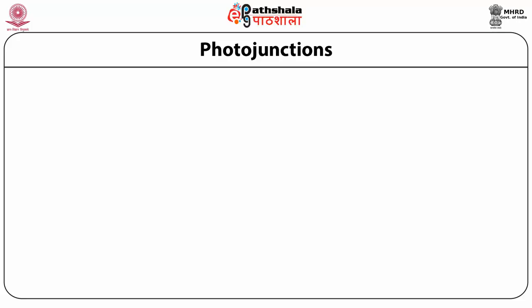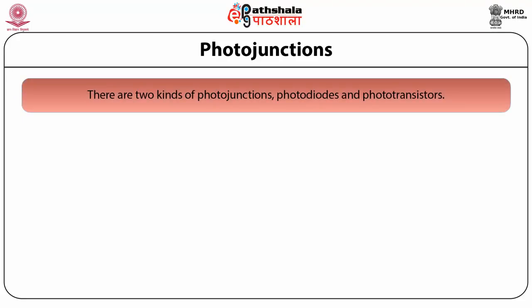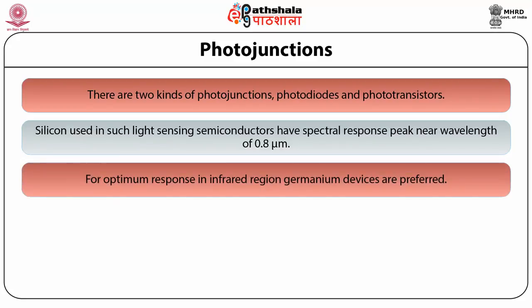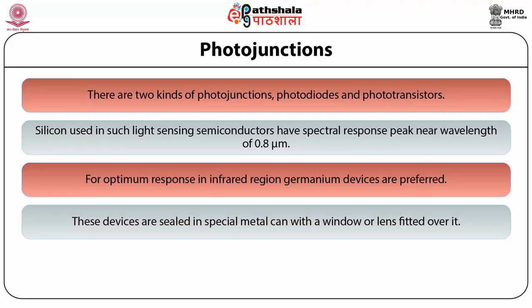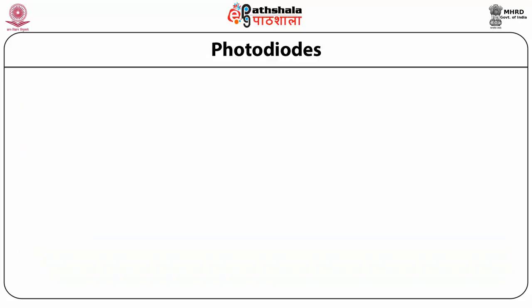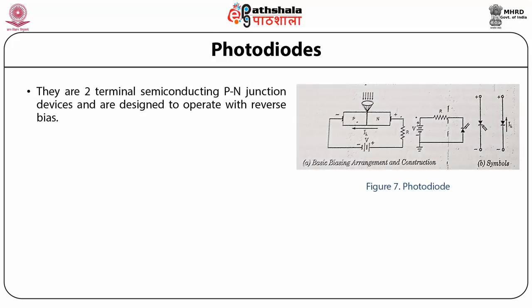There are two kinds of photojunctions: photodiodes and phototransistors. Silicon used in such light-sensing semiconductors has a spectral response peak near a wavelength of 0.8 microns. For optimum response in the infrared region, germanium devices are preferred. These devices are sealed in a metal can with a window or lens fitted over it to focus incident light onto the p-n junction. Photodiodes are two-terminal semiconducting p-n junction devices designed to operate with reverse bias.